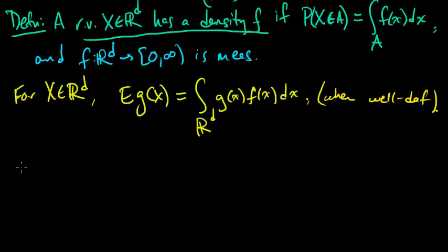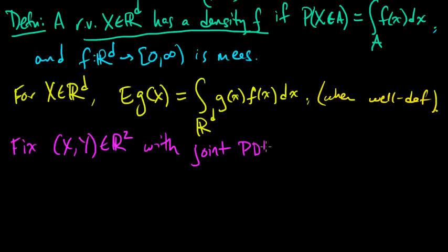So that's one nice fact. And so now let's fix, like we did for the discrete case, just a two-dimensional random vector with a joint PDF. So I didn't emphasize, this is called the joint density of this random vector, this function f on R^d. So this is the joint PDF, this f, with joint PDF f. So we're going to fix that.